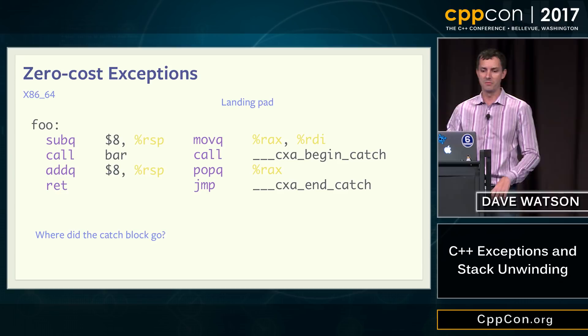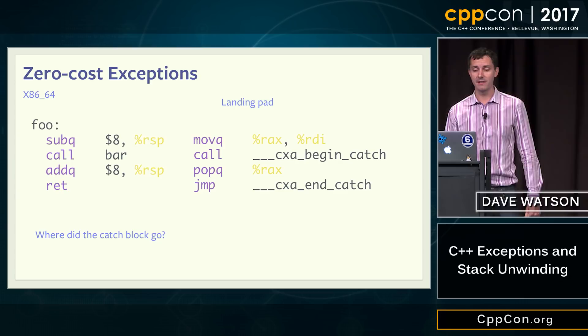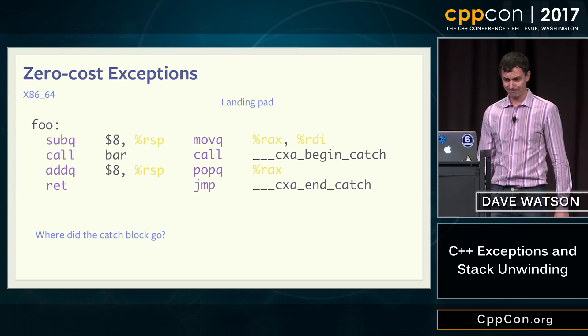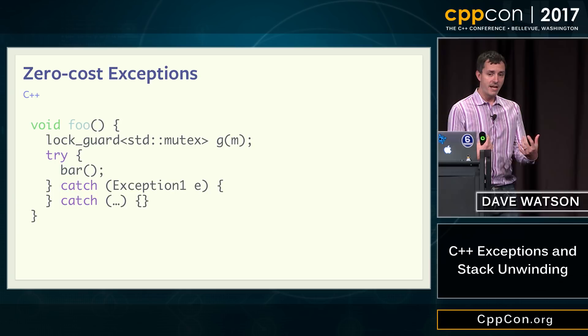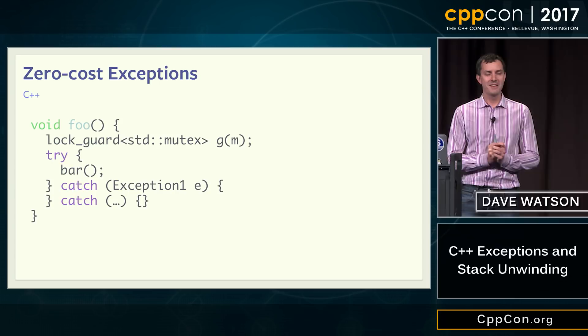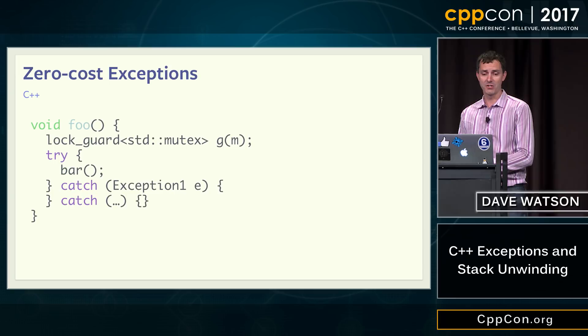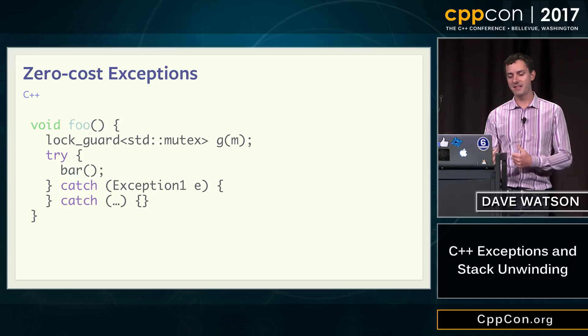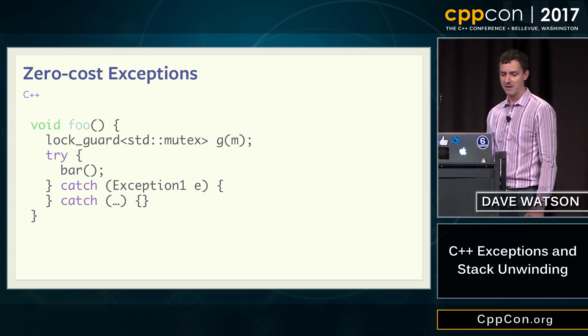We can see our first bit of the C++ exception handling ABI: CXA begin catch and end catch. In addition to splitting apart exception handling from the actual instructions, we generate a little table that says: here are the types of exceptions we're going to handle, and here are the catch statements for them. It'll jump to the landing pad for that catch block.